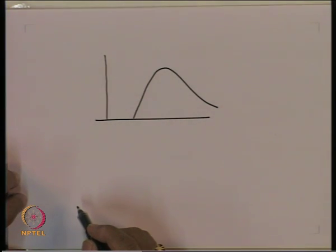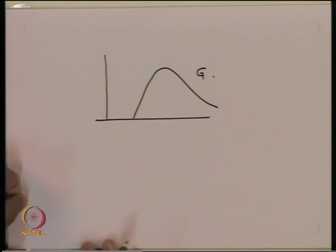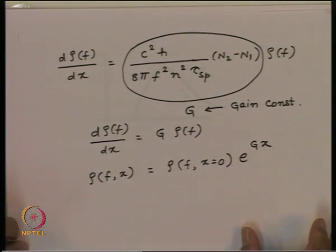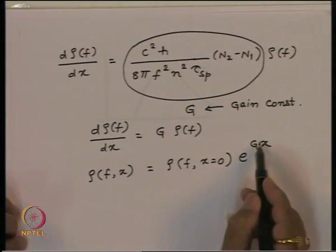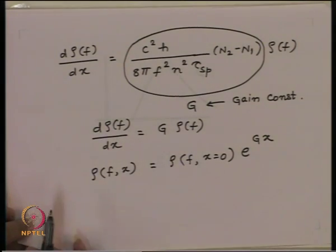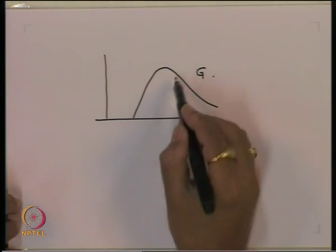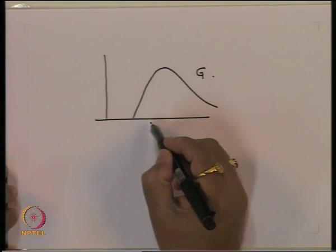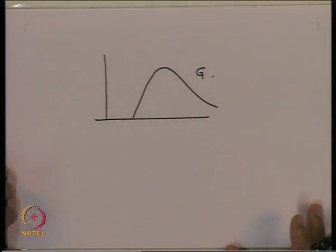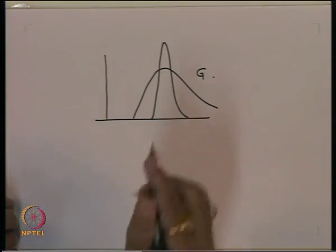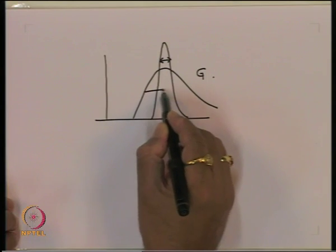The gain function essentially follows what we have seen for the LED — it has a variation like that. This function is controlling the quantity N2 minus N1. But since G rides on the exponent, the spectrum of the photon flux as a function of frequency will be much sharper compared to the gain profile, because the photon flux has a spectral distribution which is e to the power G. So we get a photon flux distribution which will be much narrower, and the spectral width will be much smaller compared to the spectral width of the gain profile.